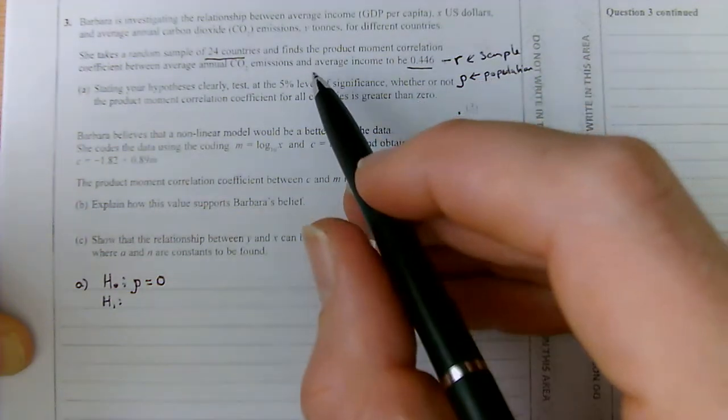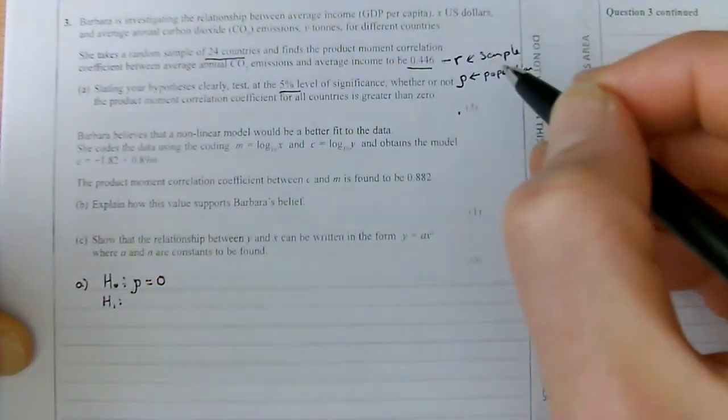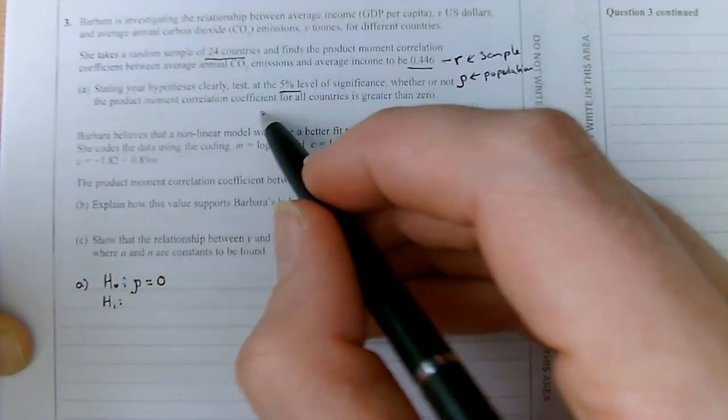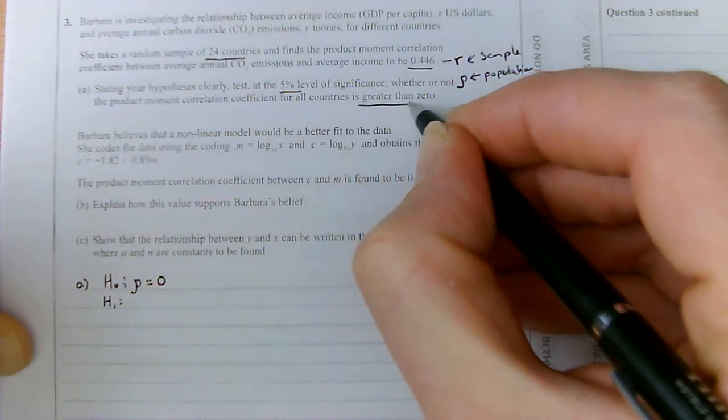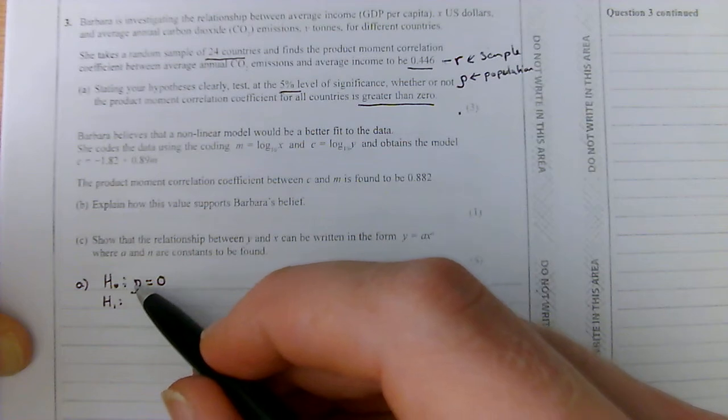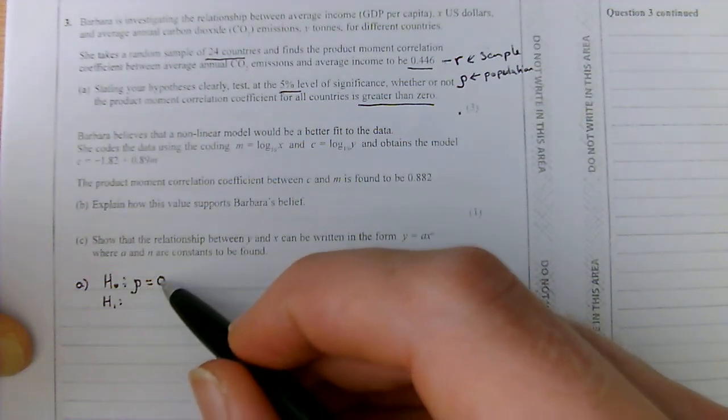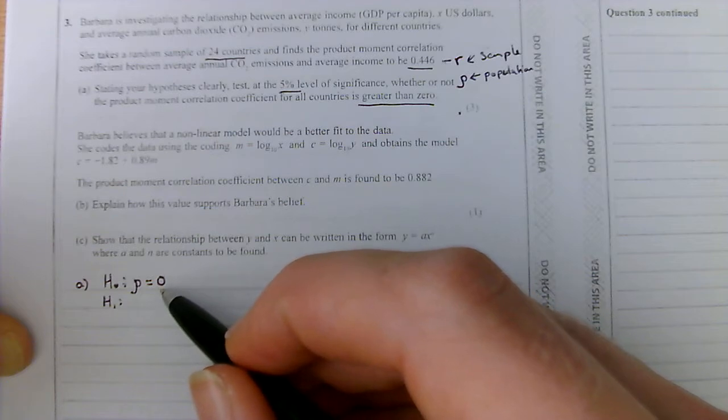We've got correlation coefficient, we know the significance level is 5%, and the important word here is greater than 0. That allows us to form our hypotheses. So the null hypothesis is always going to be that the correlation coefficient in the population is 0. There is no real correlation between income and carbon emissions.